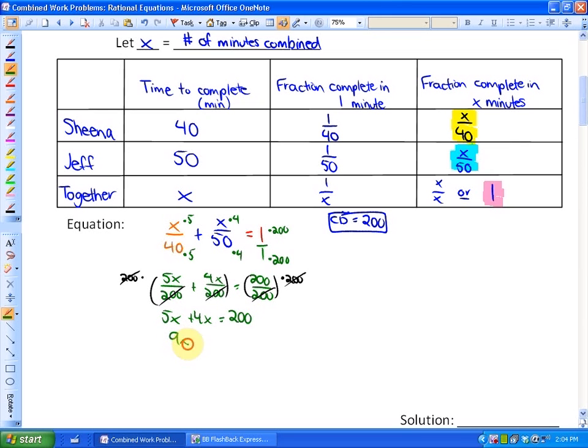After we collect like terms, we have 9x equals 200. So x equals 200/9. Combined, they could finish their job in 200 divided by 9, which is equivalent to 22.2 minutes. That is our solution.